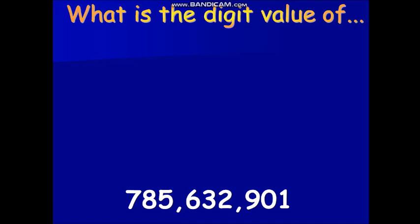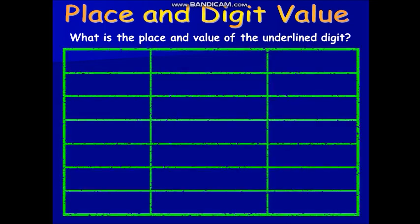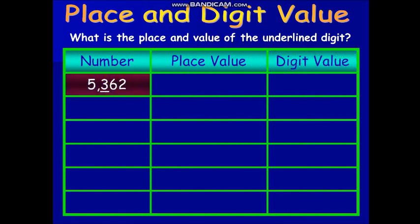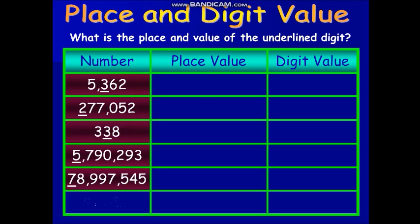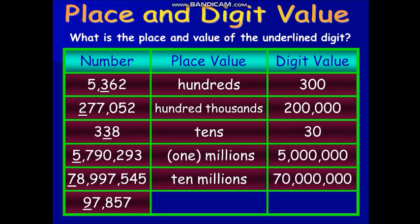Now let's have an activity. Copy the chart on your notebooks and complete it by writing the place value and digit values of the underlined numbers. I have given one example as your guide. Pause the video and play it once you are done. Okay, now that you are done completing the chart, it's time for you to check the answers. The full score is 10 points. Great job, guys!